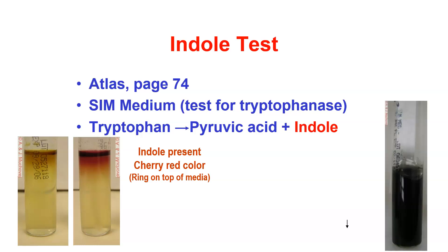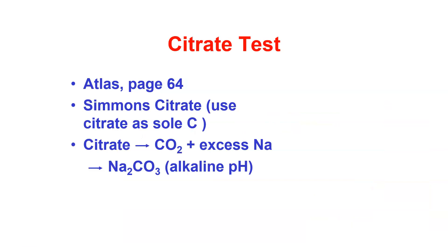SIMS medium can also tell us about sulfur reduction. If an organism is able to reduce sulfur, we get a black precipitate in the medium, giving a characteristic dark coloration. When we look at SIMS media results, you can have sulfur reduction with indole negative, sulfur reduction with indole positive, no sulfur reduction indole negative, or no sulfur reduction indole positive — so we actually get four results out of this one medium. The two tubes on the left are sulfur reduction negative.